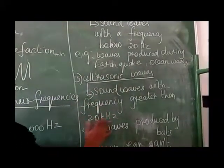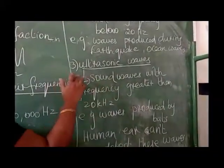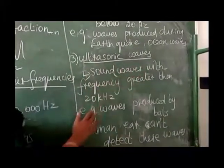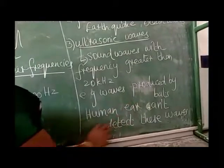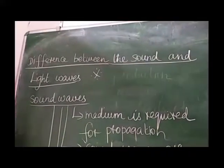Third one, ultrasonic. Sound waves with the frequency greater than 20 kilohertz is known as ultrasonic waves. Example: waves produced by bat. Human ear cannot detect these waves.